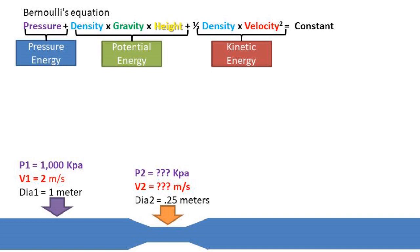We are given the pressure at point 1 of 1000 kilopascals, velocity at point 1 of 2 meters per second, diameter at point 1 of 1 meter, and diameter at point 2 of 0.25 meters.